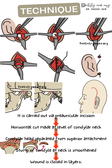As indicated, this procedure is used in fibrous ankylosis. The next step involves smoothening the stump of the condyle at the neck, which creates a new joint. Finally, the wound is closed in layers — first suturing the capsule, followed by the final skin suturing.